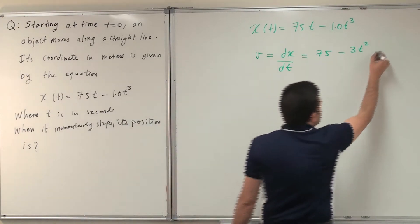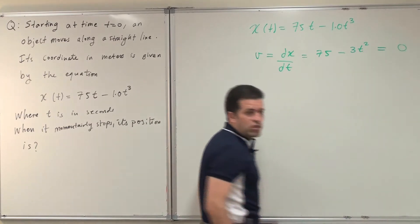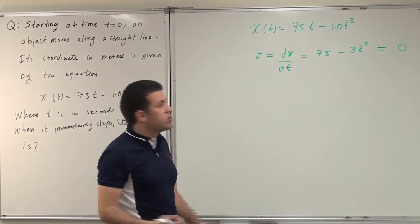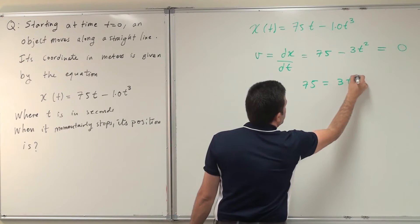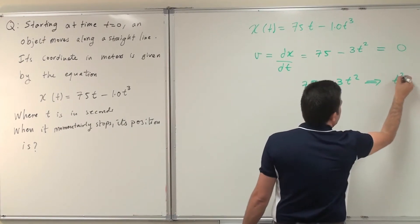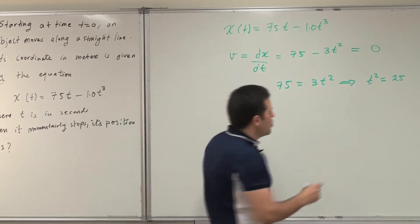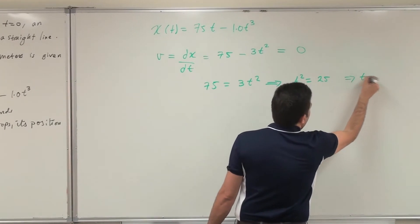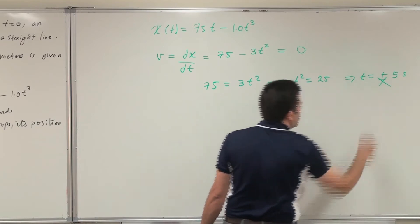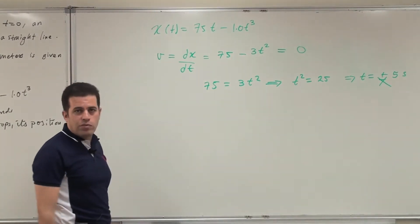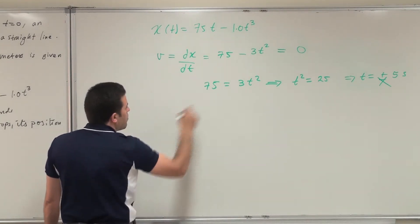Now, if I equate this to speed, this is the condition when it stops. So I need to equate it to zero to find the time when it stops. This will give me that t squared equals 25. I know that this equation has two answers, which is t equals plus or minus 5 seconds. But I can exclude the negative answer because this is not physically possible.